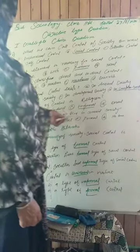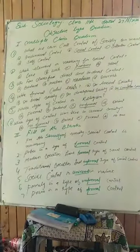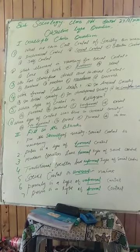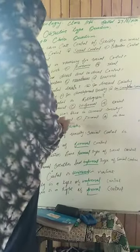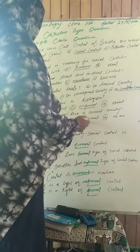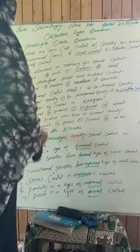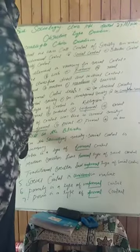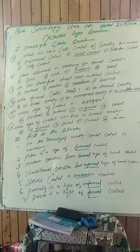Which type of control was there in ancient society? Ancient society mein control ka kaunsa type chalta tha? The options are: non-formal, direct, formal, or number one. In ancient society, non-formal control lagu tha. That means A is correct for this question.